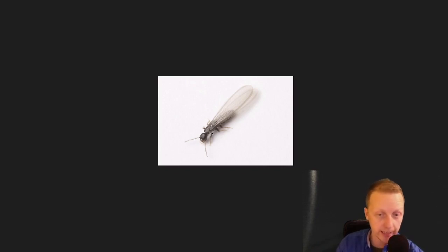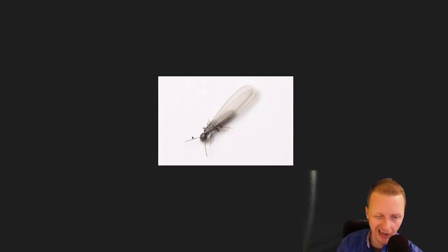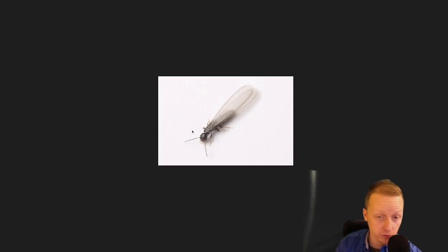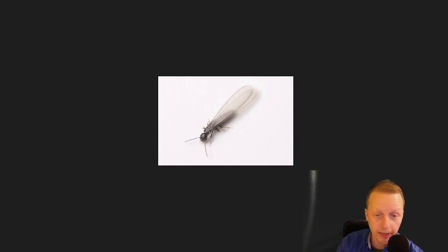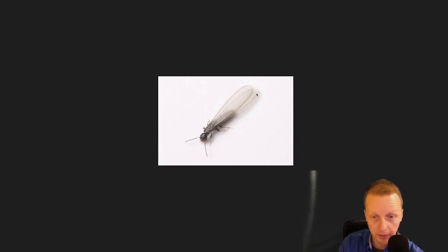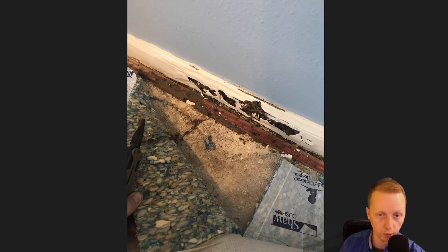This is a termite swarmer. How you tell a termite swarmer from an ant is that an ant has three separate body sections — a butt, a middle section, and a head. A termite has one solid body, a head, and four wings. So if you see that one solid body, that's normally a termite swarmer.